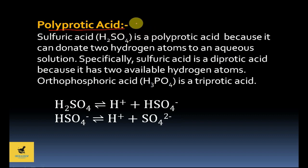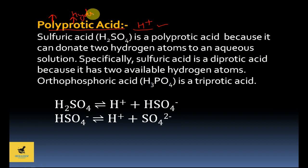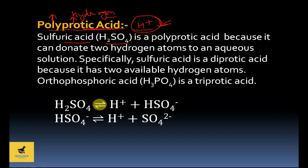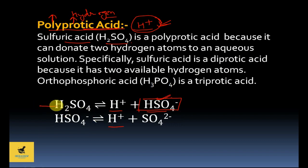Next important term is polyprotic acid. Polyprotic acids are those acids which release more than one H⁺ ion in water. As the name suggests, poly means many and protic means hydrogen. For example, sulfuric acid H₂SO₄ — in water, it breaks into H⁺ and HSO₄⁻, and then HSO₄⁻ further dissociates to release another H⁺ ion. So H₂SO₄ can give 2 H⁺ ions in water, which is why it is called a diprotic acid, or simply a polyprotic acid.